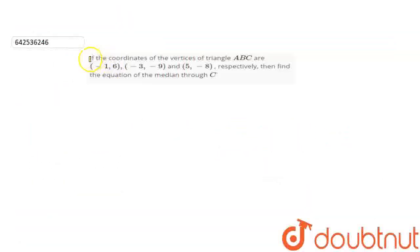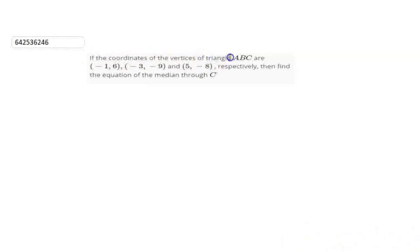The question given to us is: if the coordinates of the vertices of triangle ABC are A(-1, 6), B(-3, -9), and C(5, -8) respectively, then find the equation of the median through C.